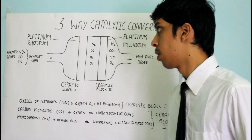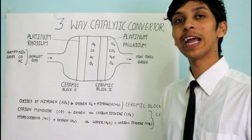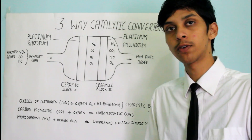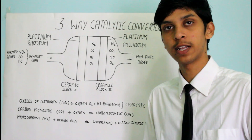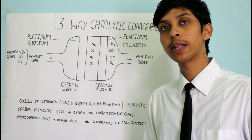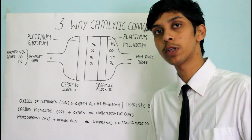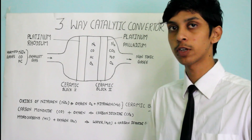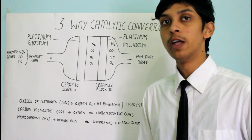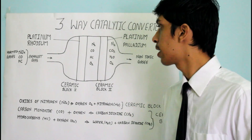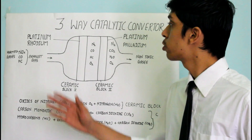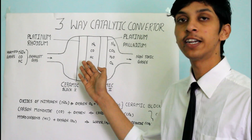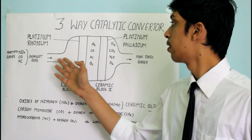When the exhaust gases come out from the engine cylinder, those gases go to the exhaust pipe, and after the exhaust pipe the gases go to the catalytic converter.